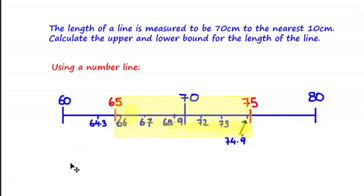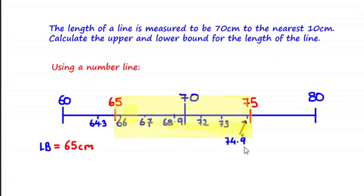The lower bound is the lowest possible number the value could have been before being rounded up to the estimated value. In this case that is 65, as any value below 65 would round down to 60 to the nearest 10 centimetres. The highest possible value that would round to give 70 would theoretically be 74.9999... recurring. However, since we're looking at boundary points, the upper bound is equal to 75 centimetres.